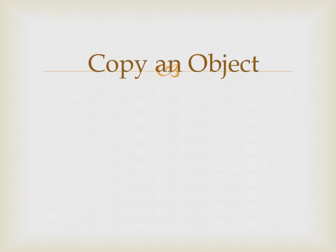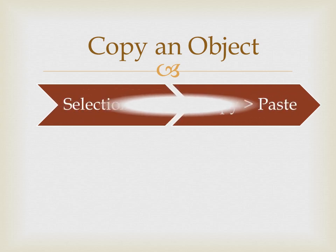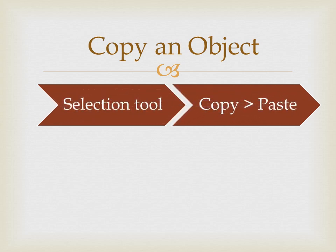Now, how to copy an object. Select the object using the selection tool. Now select the Copy option from the Edit menu. Then select the Paste in Center option from the Edit menu to paste a duplicate copy of the object at the center of the work area.